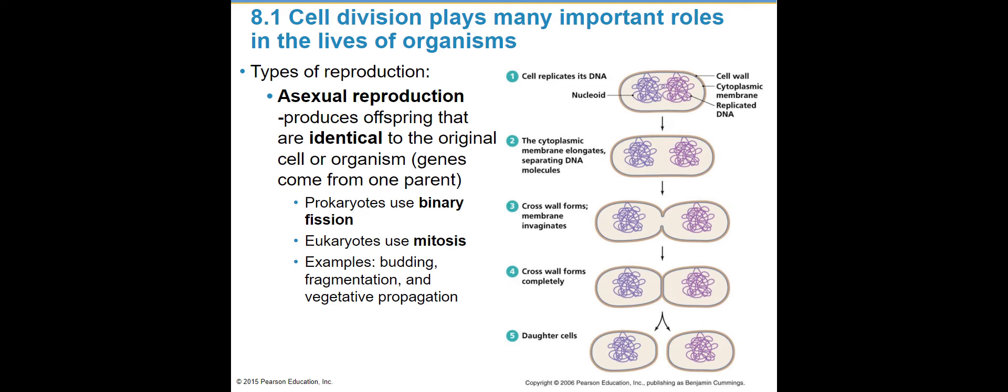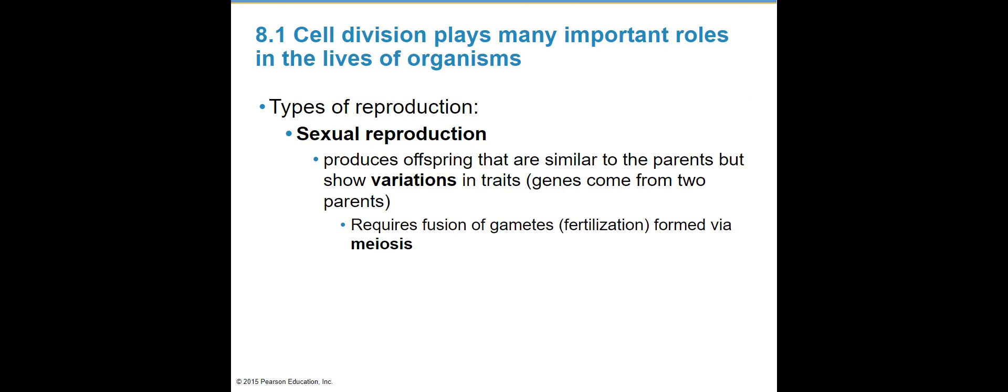Some examples are budding, fragmentation, where a little chunk of that plant will grow into a whole new plant, or something called vegetative propagation, where some roots spread out and a new plant will grow out of those roots. The other type of reproduction is sexual reproduction. It's going to make offspring that are similar to the parents, but they have variations in their genes — a genetically unique individual. It requires the fusion of gametes, which is the fusion of sex cells. We call it fertilization, and those gametes were made during meiosis.